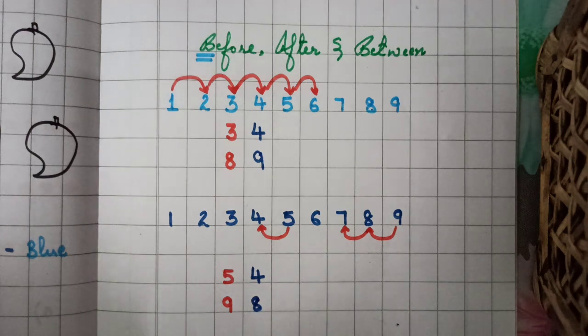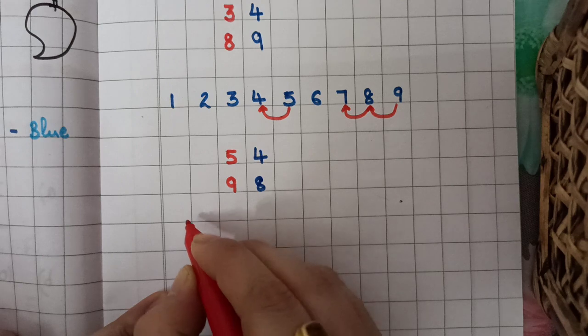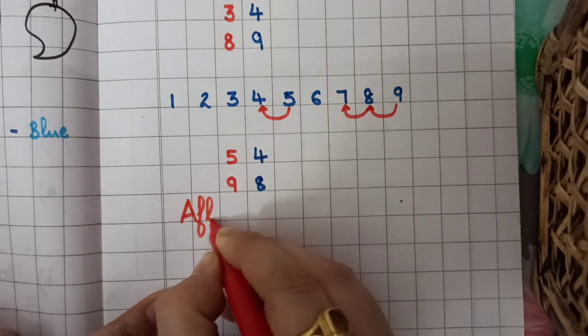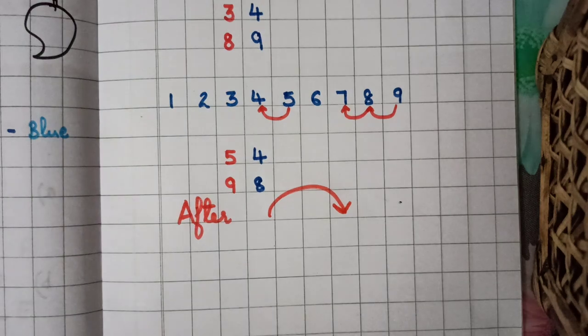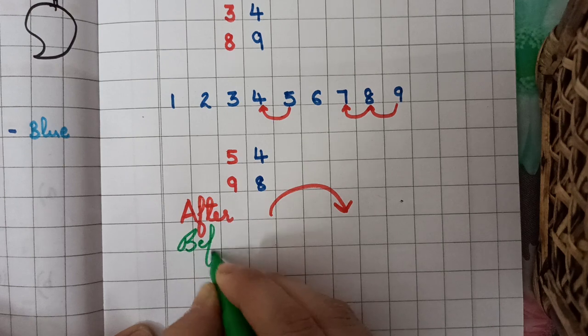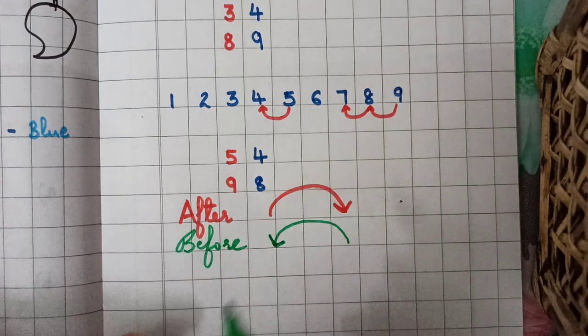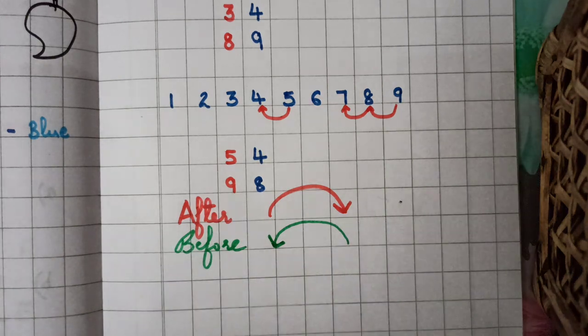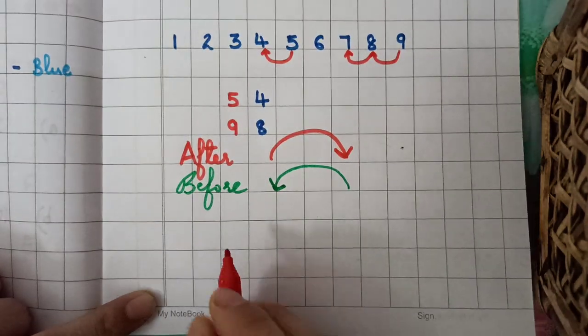Okay, so this is the way to tell them, easy way. After means you have to jump forward, okay. Before, you have to jump backward, right. And then comes the between.